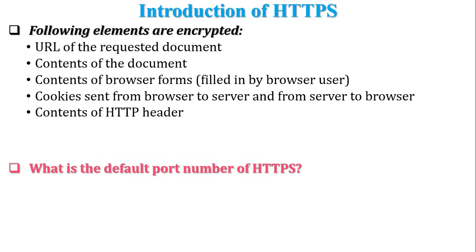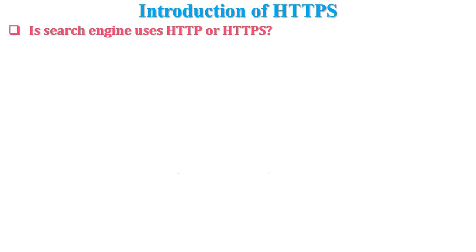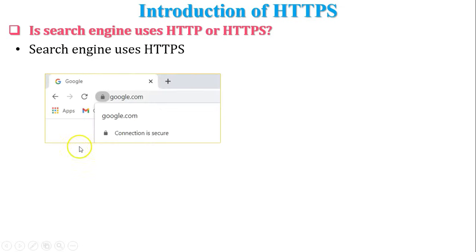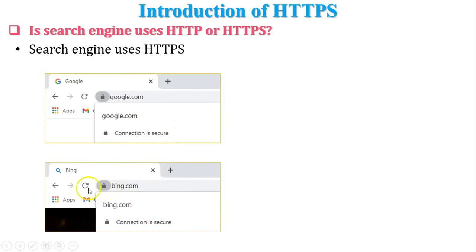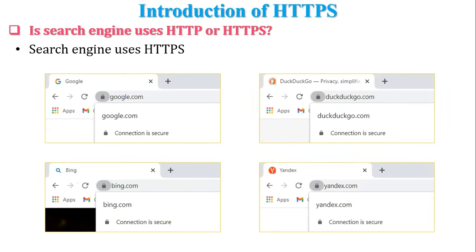The default port number of HTTPS is 443. Nowadays, search engines use HTTPS. Some older textbooks indicated that search engines did not support HTTPS, but currently Google, Bing, DuckDuckGo, and Yandex all use HTTPS. You can verify this by checking that the connection is marked as secure in the browser. Nowadays all secure websites support HTTPS.